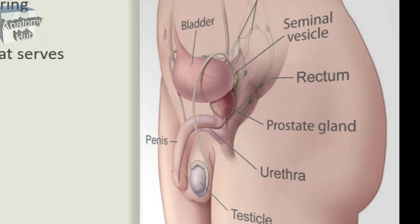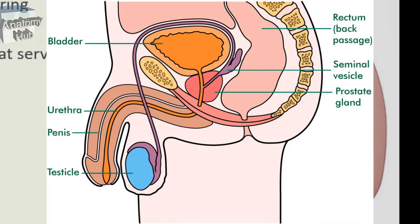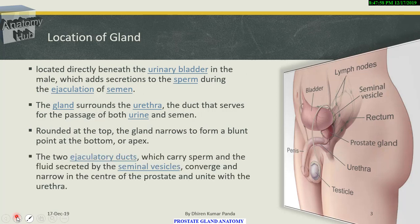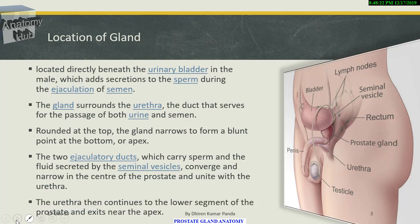The prostate is between the neck of the bladder and the upper surface of the urogenital diaphragm. It is behind the pubic arch and in front of the ampulla of the rectum. It is an inverted flat conical structure with a base, an apex, and posterior, anterior, and two inferolateral surfaces. The two ejaculatory ducts carry sperm and fluid from the seminal vesicles, converging in the center of the prostate and uniting with the urethra, which exits near the apex.